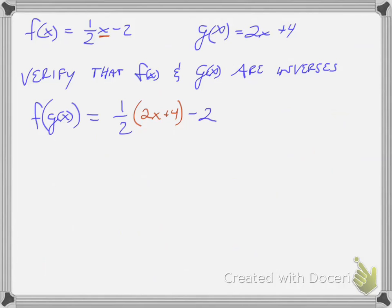And when I simplify it and distribute that one half, one half times 2x becomes x, one half times 4 is 2 minus 2 that becomes x. So because it became x, that means that they're inverses of each other.